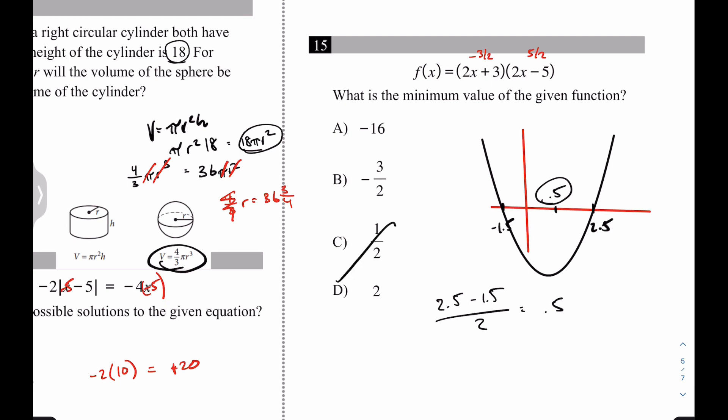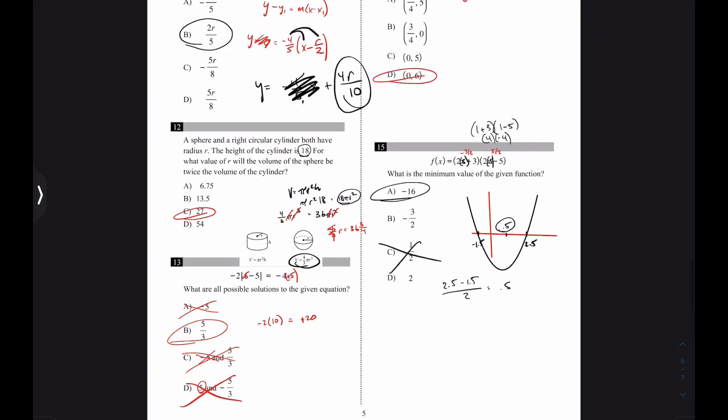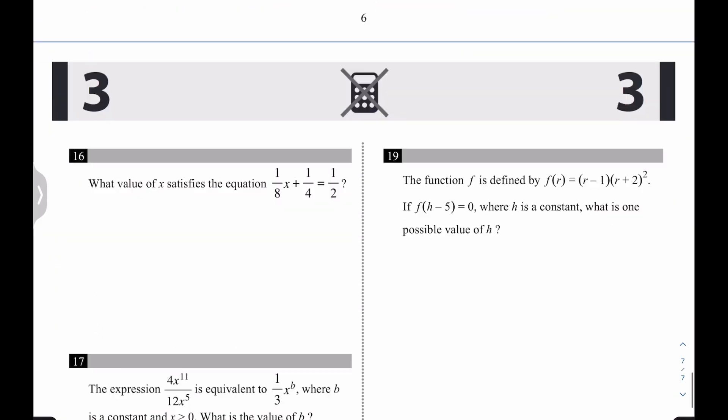But now, that's not what they're asking. So C is wrong. They're asking for the minimum value. What is the y-value that it's lowest? So plug in 0.5 for x. And when you do that, you get 1 plus 3 times 1 minus 5. So really, 4 times negative 4. 4 times negative 4 is negative 16. Sweet. We're flying. Come down here for number 16.